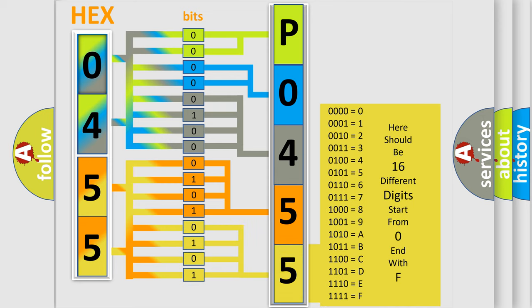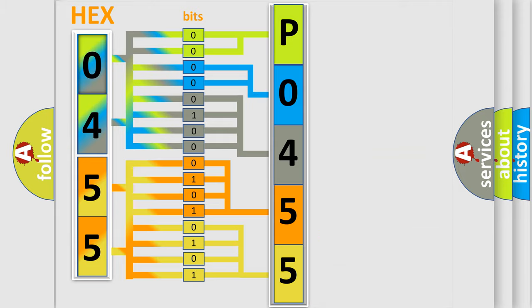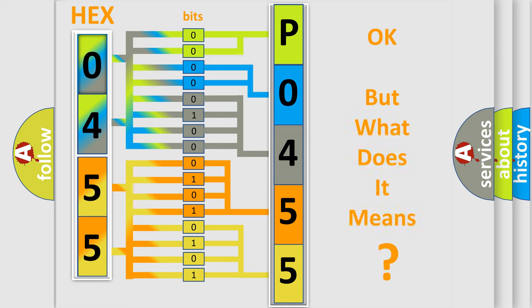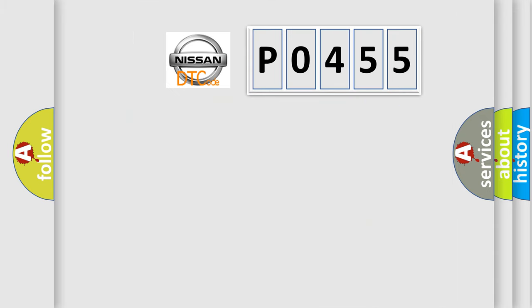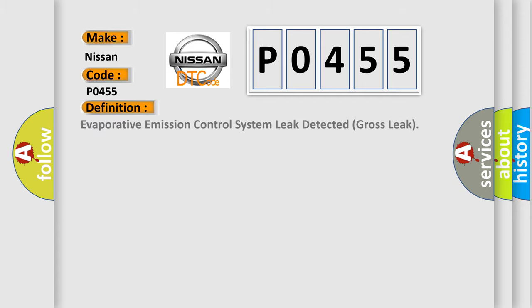We now know how the diagnostic tool translates the received information into a more comprehensible format. The number itself does not make sense to us if we cannot assign information about what it actually expresses. So, what does the diagnostic trouble code P0455 interpret specifically? For Nissan car manufacturers, the basic definition is: Evaporative Emission Control System Leak Detected — Gross Leak.